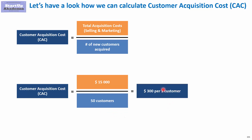In order to make a rational choice, we have to compare the customer acquisition cost with something — and usually we compare it with the lifetime value of the customer. Generally, you would like the cost of acquiring a customer to be three times smaller than the lifetime value of a customer.